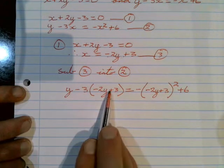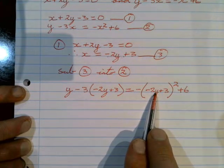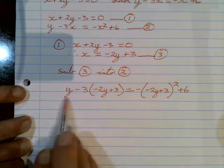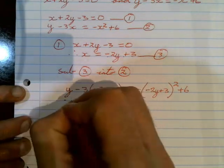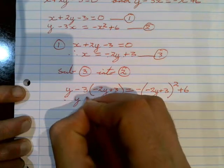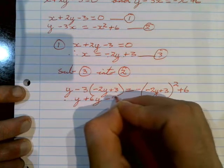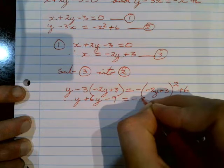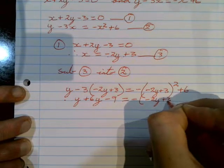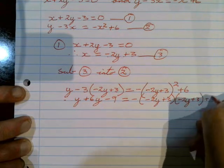Now all we've got left in this equation is y, so we need to find the values for y. We use normal algebra and multiply out all the brackets and simplify. The y stays as is; we multiply minus 3 by minus 2y to get positive 6y, and minus 3 times plus 3 gives minus 9. Then the equals sign stays, the minus sign stays, and because this is a squared bracket we write that bracket out twice, with the 6 still on the end.